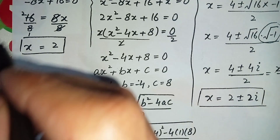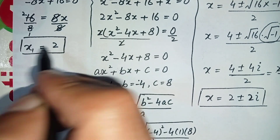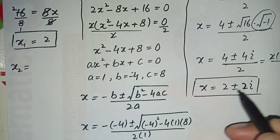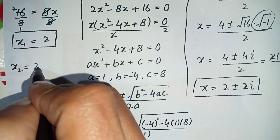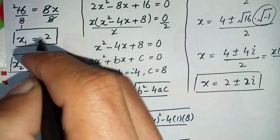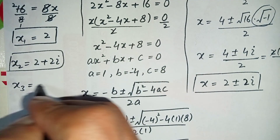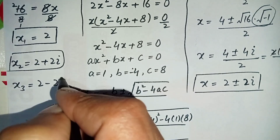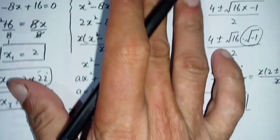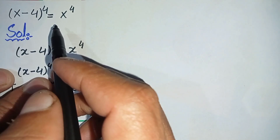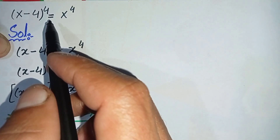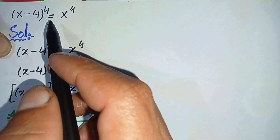So the three possible roots of the given exponential equation are: x₁ equals 2, x₂ equals 2 plus 2i, and x₃ equals 2 minus 2i. These are the three possible solutions of this exponential math problem. Don't forget to subscribe to our YouTube channel for more interesting math videos. Thank you so much for watching, take care, see you in the next video, bye bye.